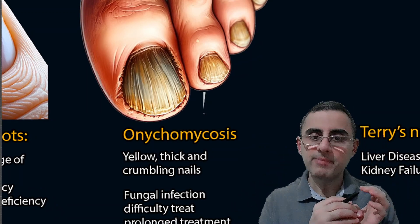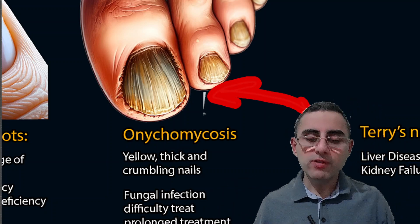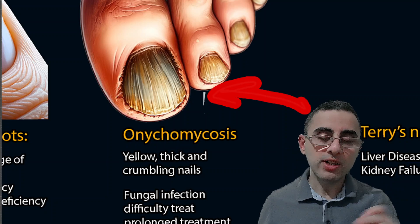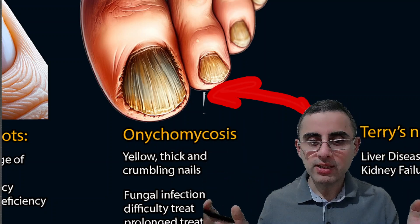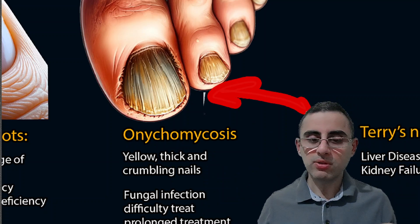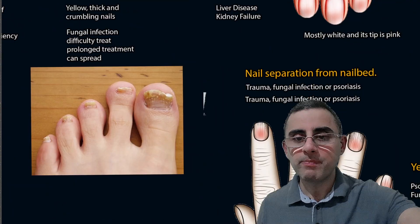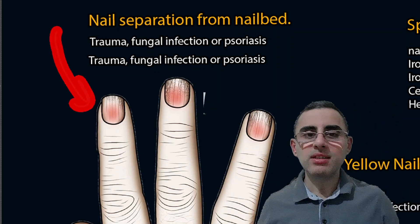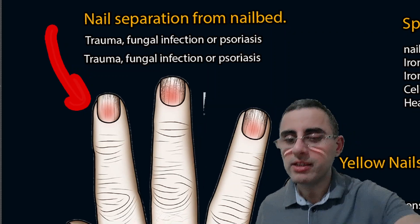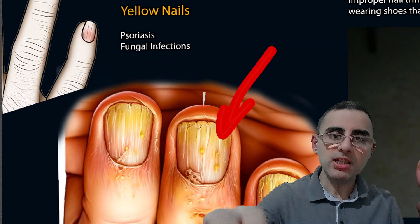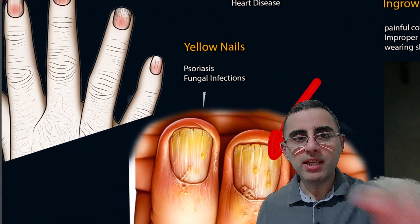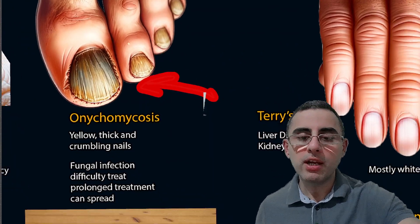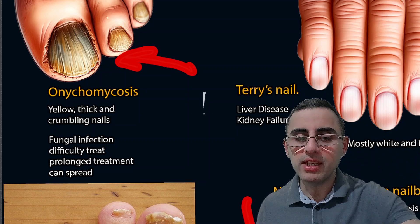Onychomycosis refers to yellow, thick, and crumbling nails, and is usually caused by fungal infection. Fungal infection is important because it is very difficult to treat and requires prolonged treatment. If left untreated, it will spread to other nails. Nail separation from the nail bed is also in many cases caused by fungal infection or psoriasis. Yellow nails and nail separation from the nail bed are most commonly signs of fungal infection, and sometimes psoriasis.